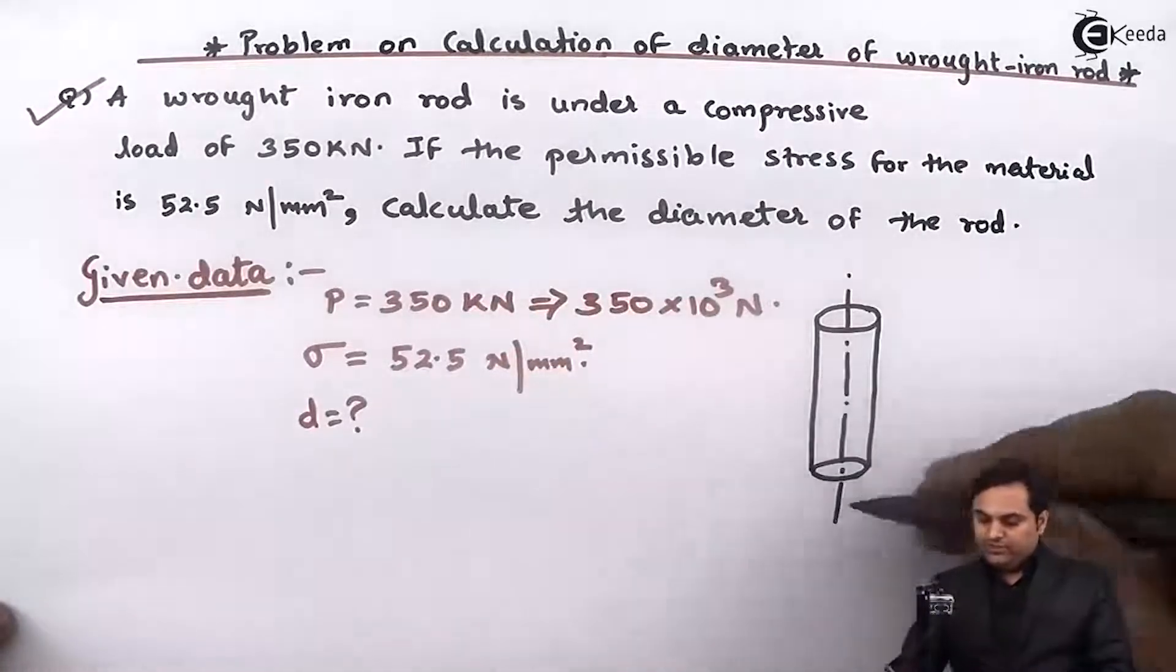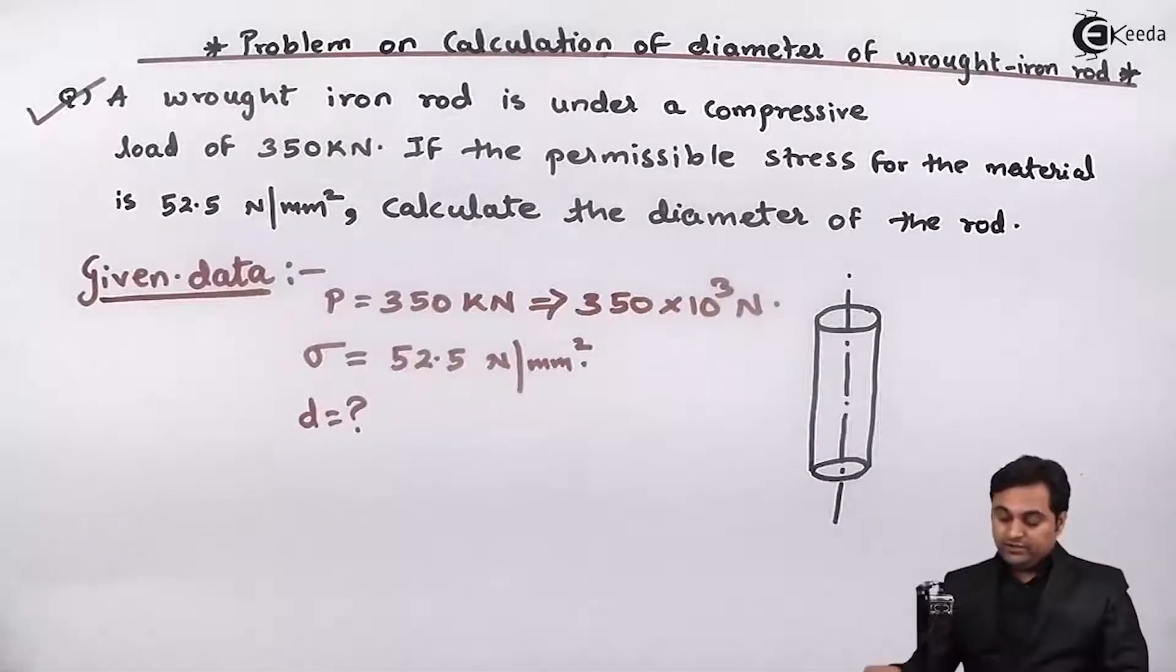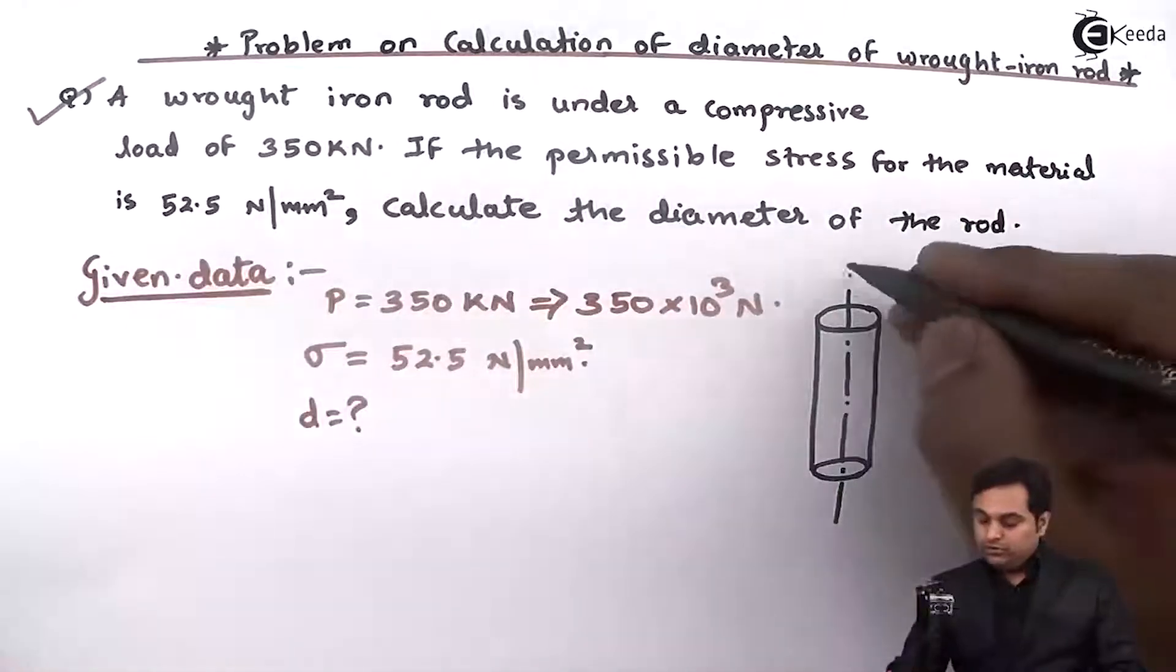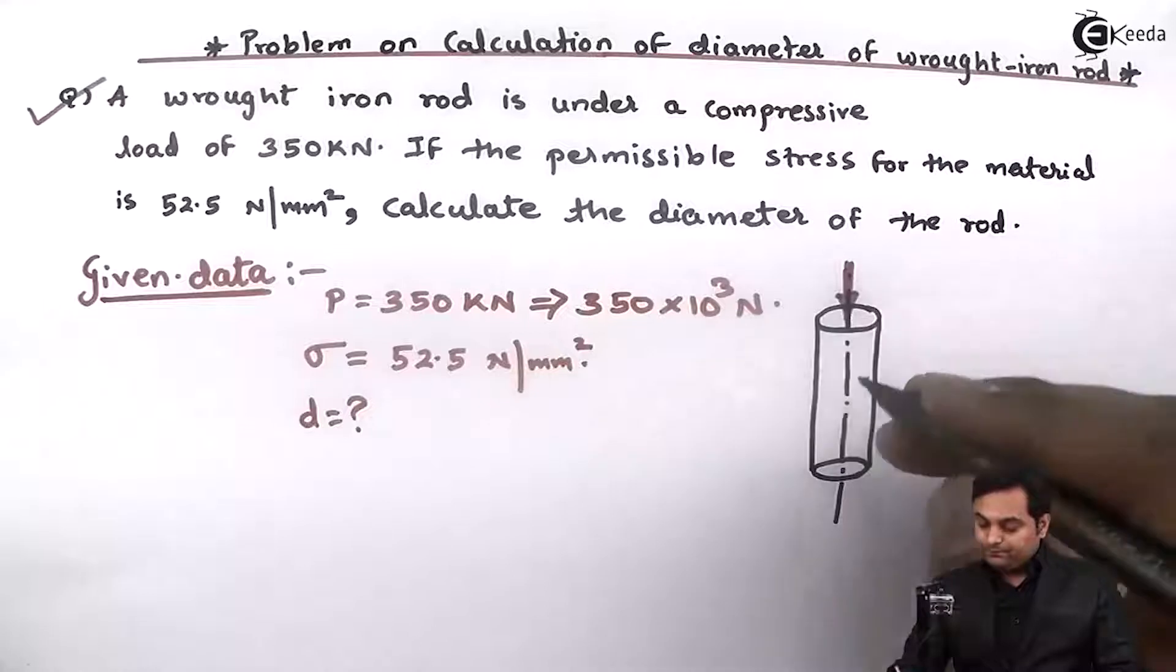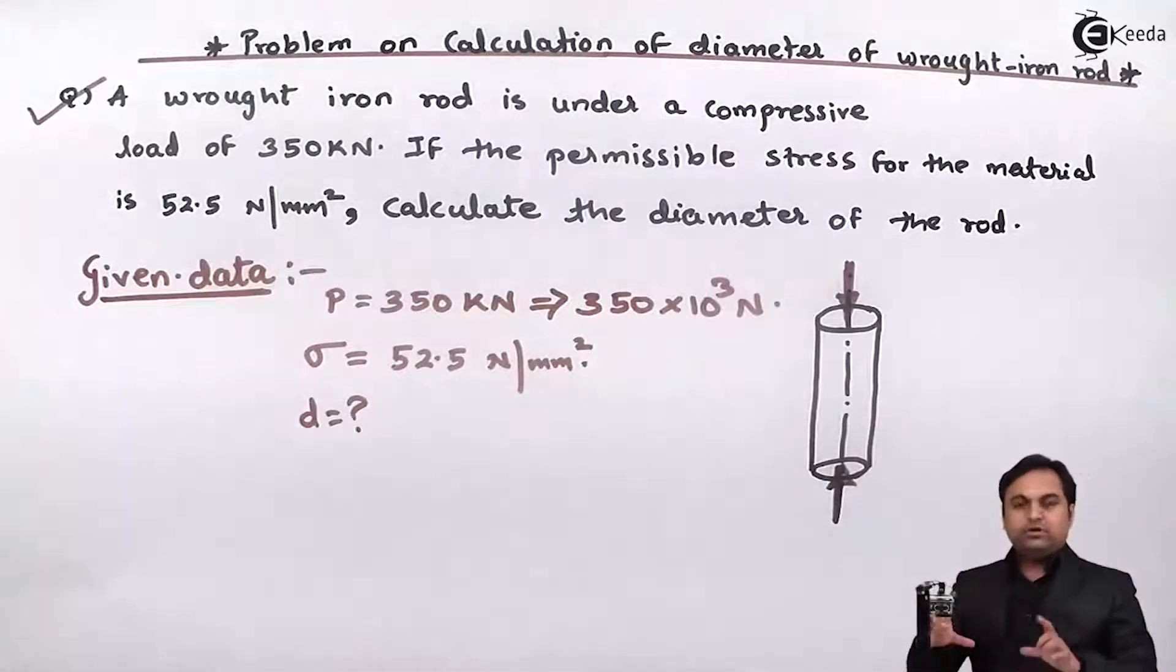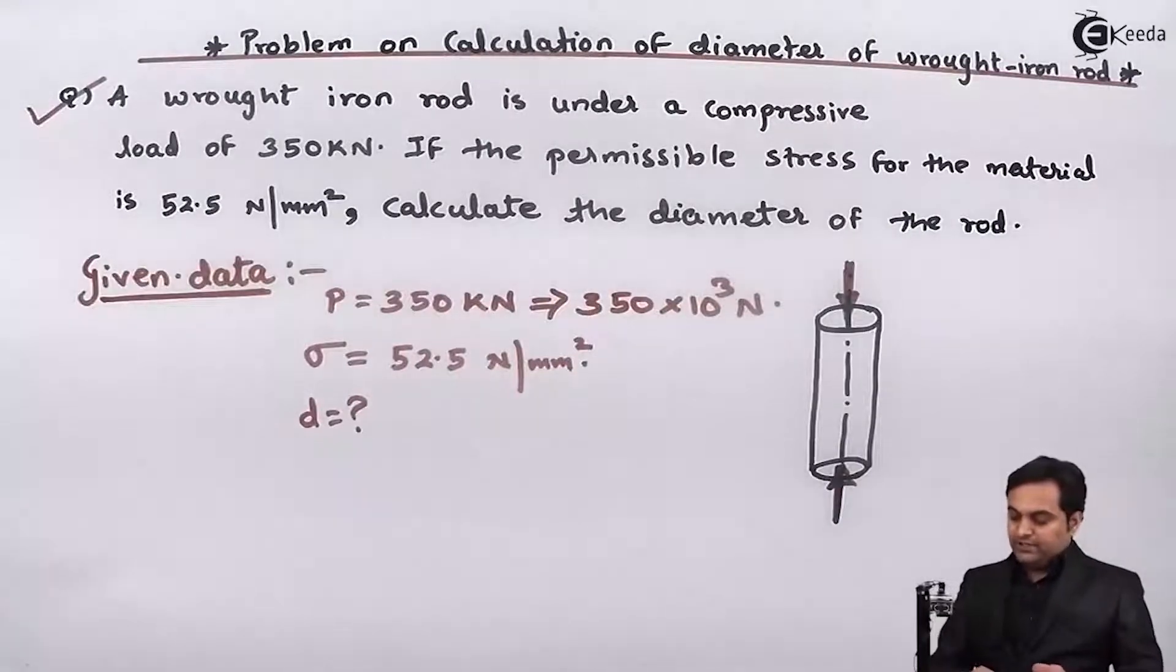We have a rod here which is made up of wrought iron. This is the axis of the rod. It is given that the rod is under compressive load, which is a push type of load trying to compress this rod.